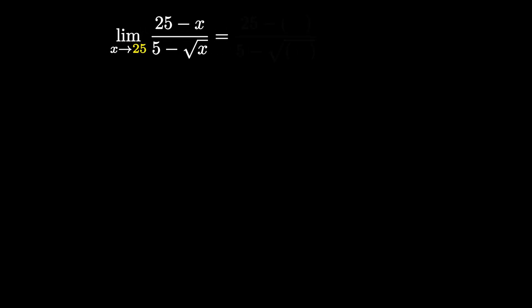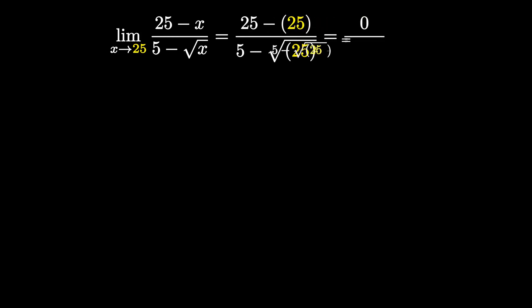So we're going to plug in 25 into our function. That gives us 25 minus 25 all over 5 minus the square root of 25. Simplifying: 25 minus 25 is 0, the square root of 25 is 5, and 5 minus 5 is 0. So we get 0 over 0, which is our indeterminate form. We can't leave this as the answer — 0 over 0 is unacceptable. We have to identify the holes of our function, since holes are common factors in the numerator and denominator that cause the 0 over 0 form.